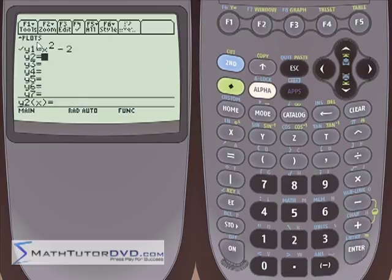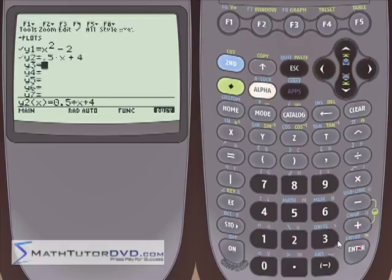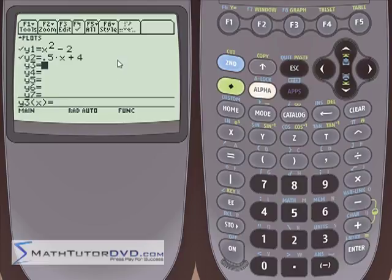We're just going to do a nice shifted parabola, parabola shifted down. And then we'll do another guy. We'll do 0.5x plus four, which is just a nice line with a real shallow slope.